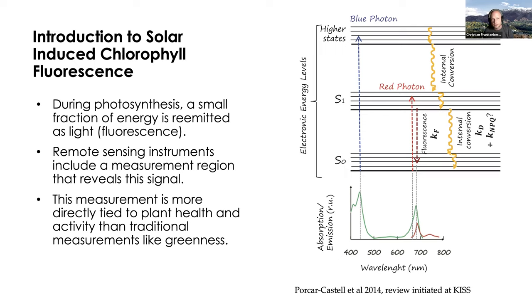During photosynthesis, a small fraction of light is always re-emitted as fluorescence. We can use remote sensing instruments operating in the spectral region where this fluorescence takes place to measure the signal from space. This measurement is more directly tied to plant health and activity than traditional measurements such as just greenness, because we're actually probing the photosynthetic machinery of plants.